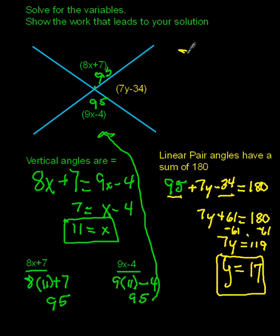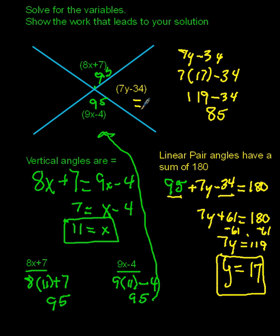And I'm going to say 7Y minus 34, if I plug in at 17, 7 times 17 minus 34, 7 times 17 will give me 119 and then minus 34. So 119 minus 34, I end up with just, let's see, that's going to give me 85. So that tells me this angle right here has a value of 85.